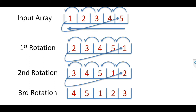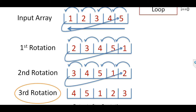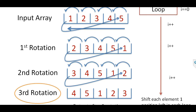The input to this problem is an array and a number of rotations. So if we say 3 rotations for this input array, the output will be 4, 5, 1, 2, 3. One way to do this is to iterate a loop and rotate by 1 position in each iteration up to the number of rotations. But we are not going to do that.